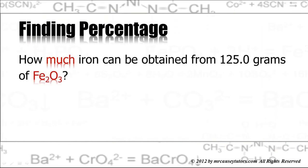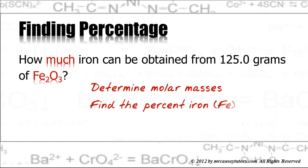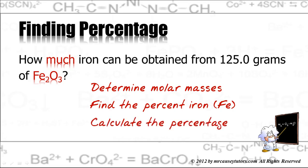Now, finding a percentage. How much iron can be obtained from 125 grams of Fe2O3, which is iron two oxide. Actually, that's iron three oxide, commonly known as rust. So, we need to determine the molar masses. We then need to find the percent iron, and then calculate the percentage. Three steps. Let's go to the magic blackboard.